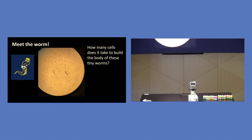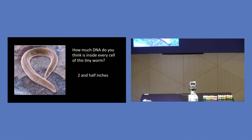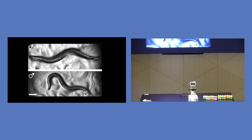And so that's the organism we study because although the magnitude is different, the question is the same. It takes about 1,000 cells to build the body of one of those tiny worms. And inside each of those cells, there's about two and a half inches of DNA. So something that's a millimeter in length has a thousand times two and a half inches of DNA inside its body. So different magnitude, but still the same question.